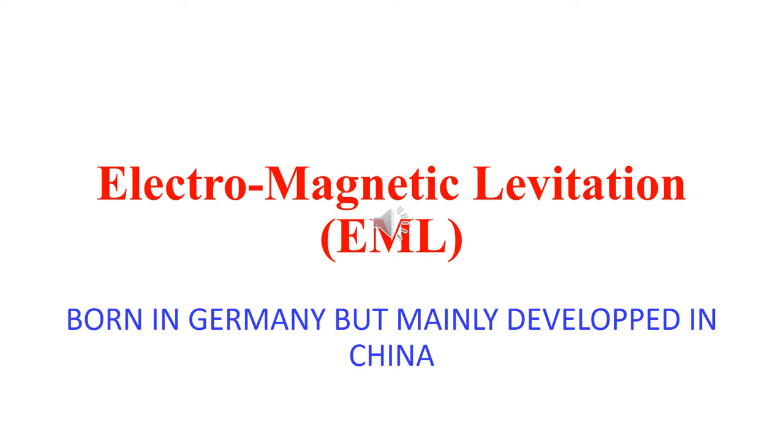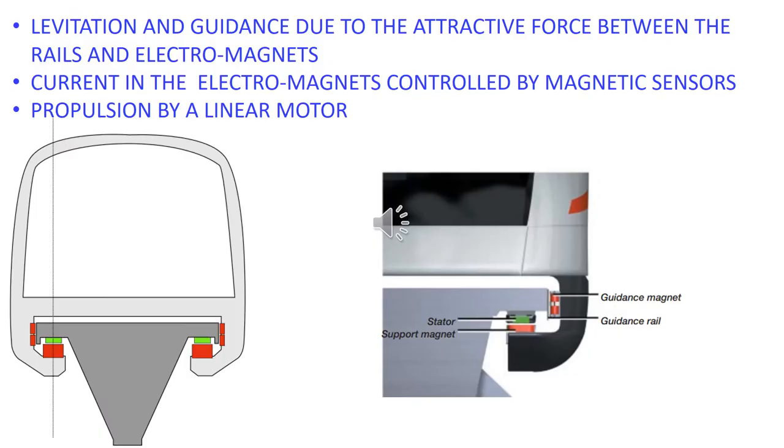Electromagnetic levitation is a concept investigated firstly in Germany, but mainly developed in China. The train levitation results from the magnetic interaction between electromagnets connected to the train and ferromagnetic rails. The current in the electromagnets is controlled by magnetic sensors. The guidance is achieved by the interaction of the rails with other electromagnets.